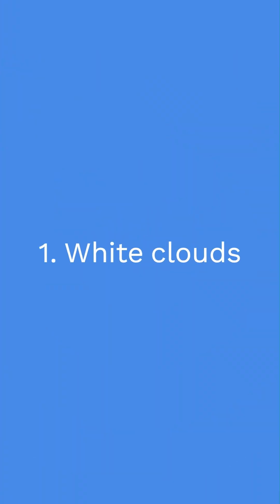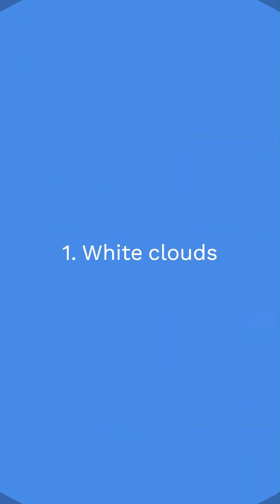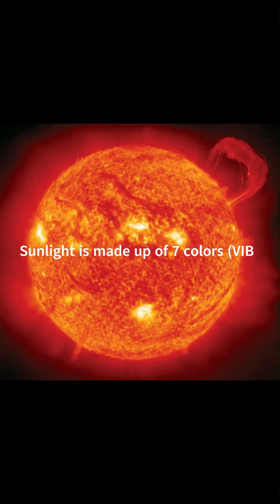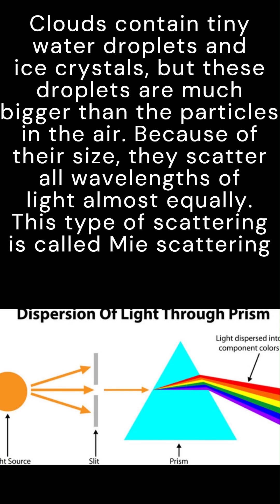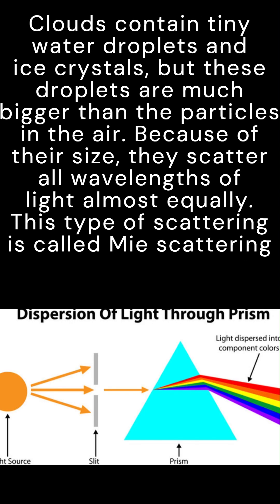Number 1: White Clouds. Sunlight is made up of seven colors: violet, indigo, blue, green, yellow, orange, and red. Clouds contain tiny water droplets and ice crystals.